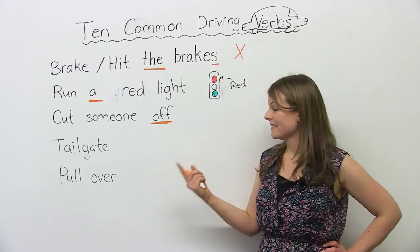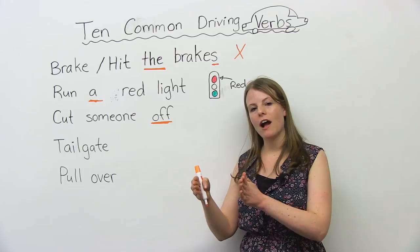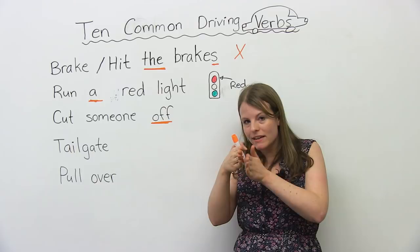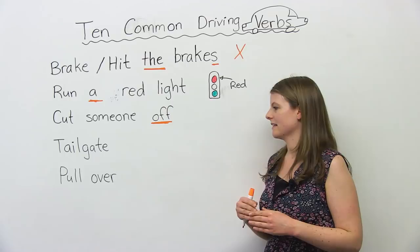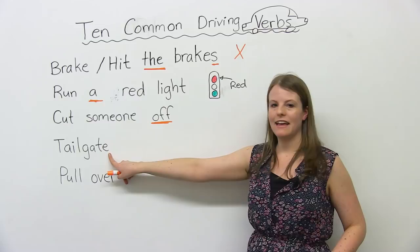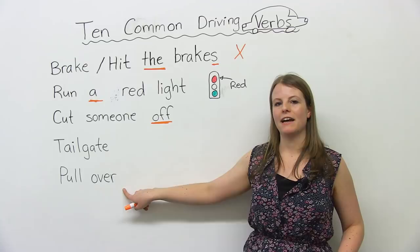Number four: tailgate. If you tailgate someone, this is another bad thing — bad, bad, bad. Tailgate is when you drive too close to someone else. For example: 'That man tailgated me' or 'I was tailgated by that man.' For running a red light, cutting someone off, and tailgating someone, you may be pulled over by the police.